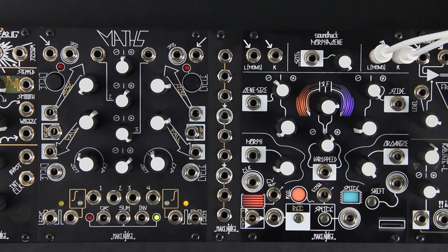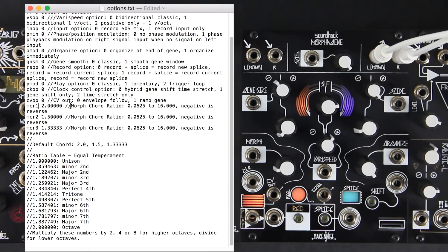As with other custom options on the Morphagene, we'll access it by opening the options.txt file from the Morphagene's SD card. The new options are at the bottom and are labeled MCR1, MCR2, and MCR3.